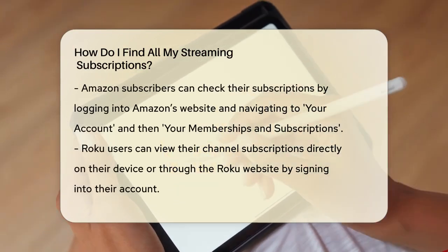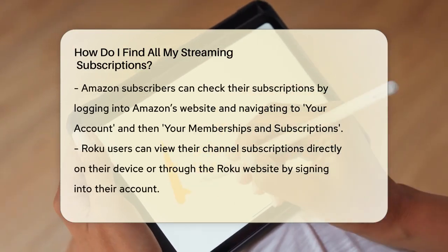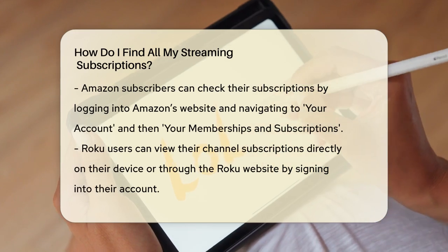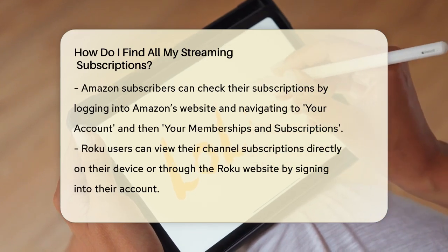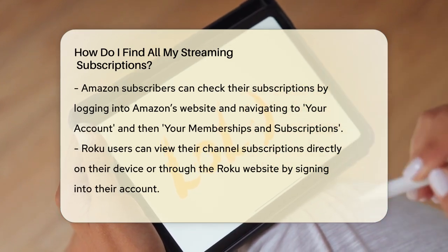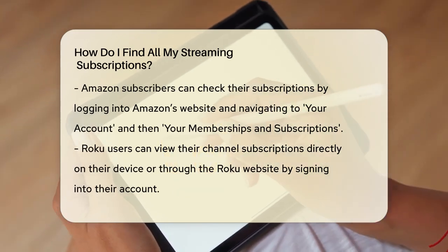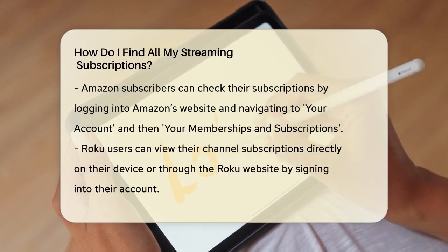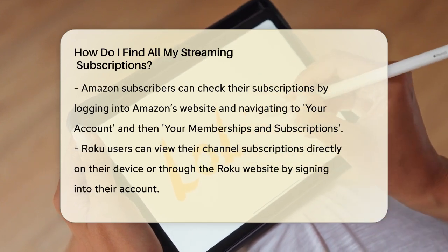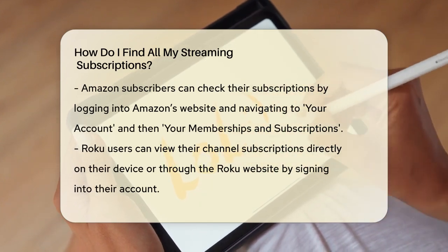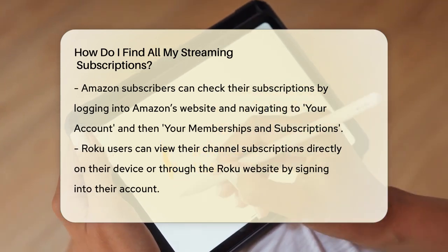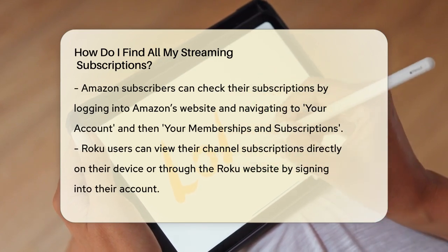For Amazon subscribers, visit Amazon's website, log in, and go to your account. From there, select your Memberships and Subscriptions. This will give you a list of all your Amazon subscriptions, including any from the Amazon App Store.